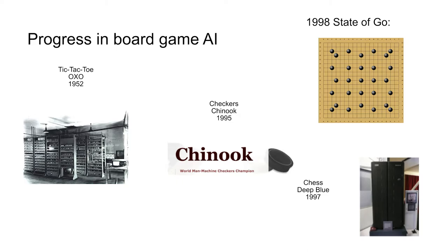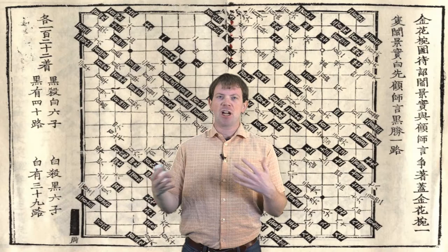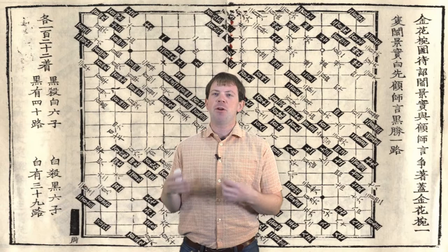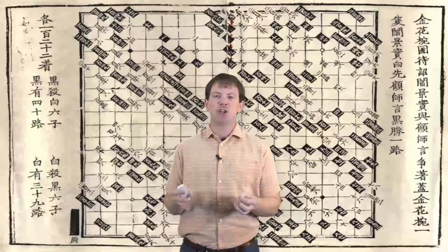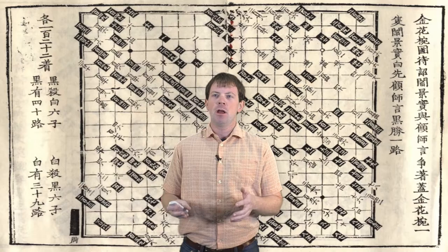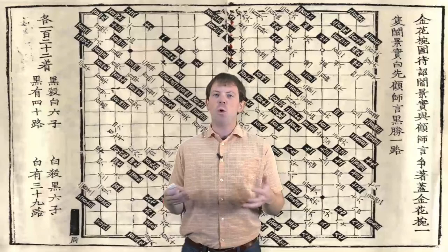Let's take a moment to talk about the rules of Go and how it works. Go is very popular worldwide, especially in East Asia, and there are over 30 million players throughout the world. There are between four and six tournaments every year with prize winnings of over a quarter of a million dollars. Go is between 2,500 and 4,000 years old, and in fact some of the oldest text we have about Go is in the writings of Confucius. So Go has a very long history.